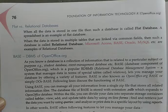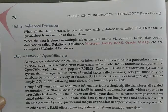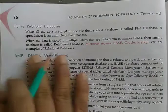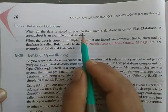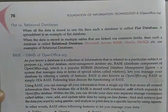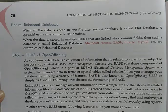Firstly, we will understand the difference between flat and relational database — what flat database is and what relational database contains. Currently all records are stored in relational databases. When all the data is stored in one file, such a database is called a flat database. A spreadsheet is an example of a flat database — when any company or organization maintains its records in one file, that is called a flat database.